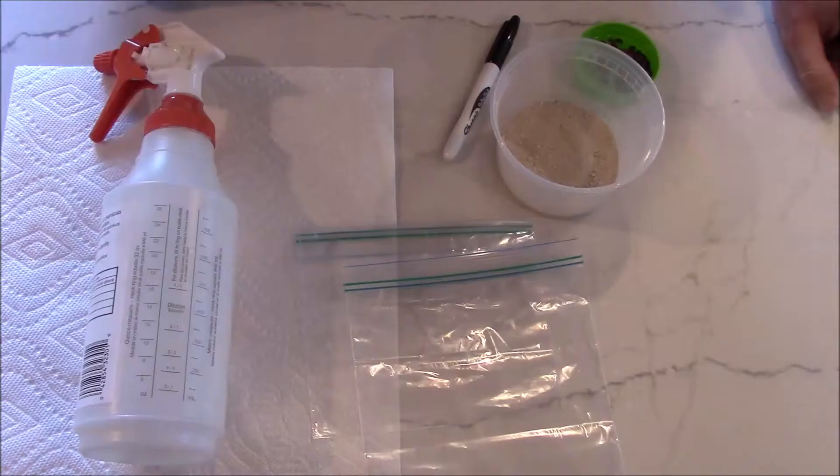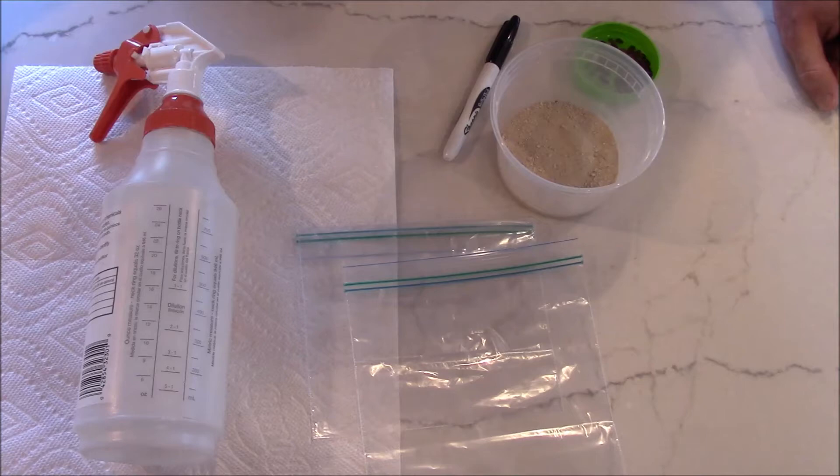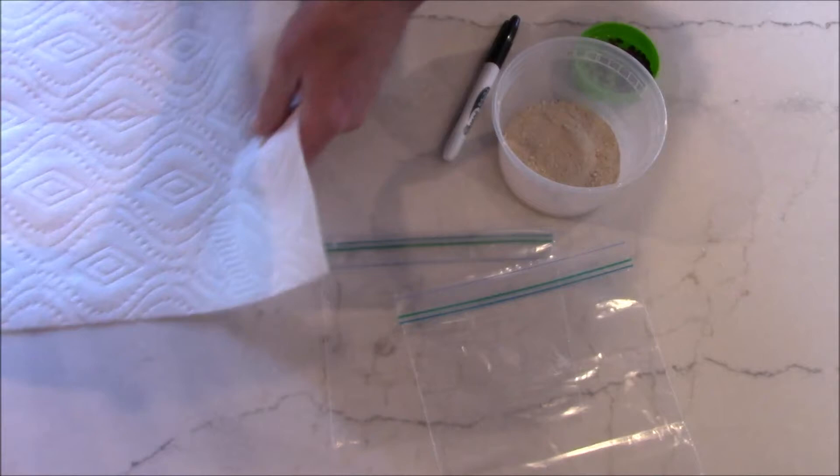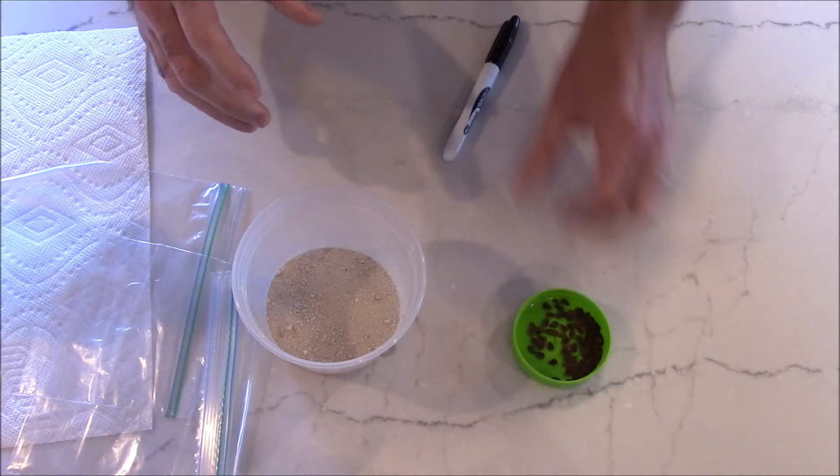But here's the materials you need. You need a spray bottle with some water in it and then a full sheet paper towel. You can see I have two half sheets there, I just left them together. A couple of plastic baggies, and some sand, and then a Sharpie and also some seeds, obviously. A Sharpie so that you can label your plastic bags so you know what you did and when you did it.